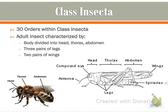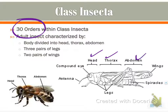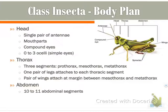Class Insecta is what we're mostly going to focus on. There are actually 30 orders within this class. An adult insect is characterized by a few major things. The body is divided into a head, a thorax, and an abdomen. They have three pairs of legs and two pairs of wings. Their head has a single pair of antennae. They have varying mouth parts, compound eyes — which allow them to see better than animals with only simple eyes — but they also have the simple eyes.